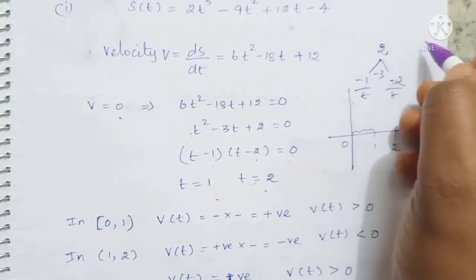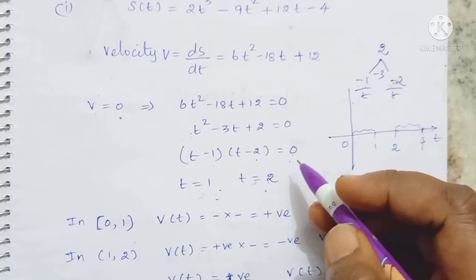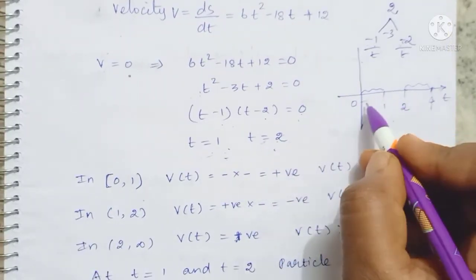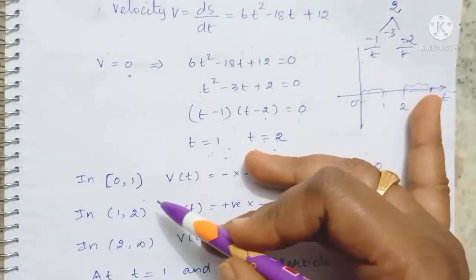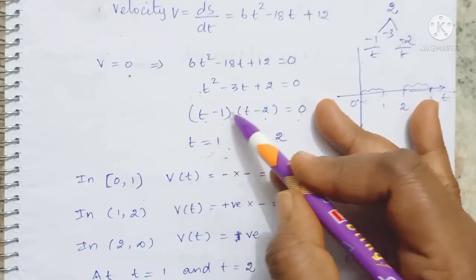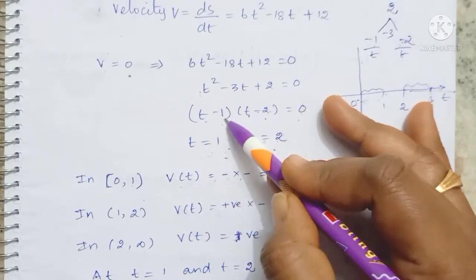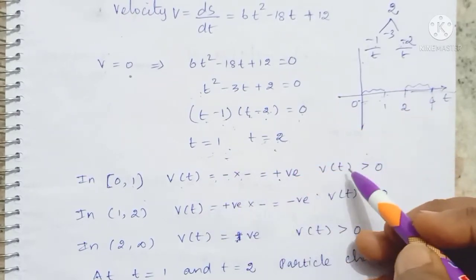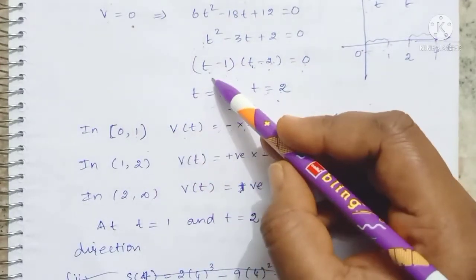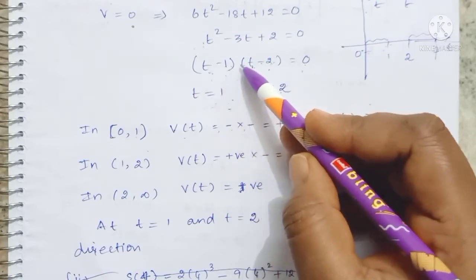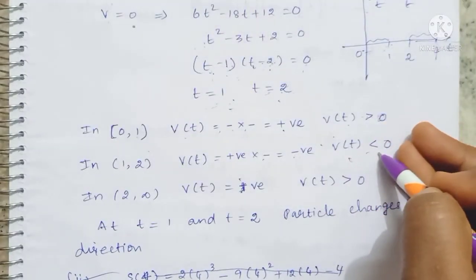We fix the intervals: starting from t equals 0, we have intervals 0 to 1, then 1 to 2, then 2 to infinity. For 0 to 1, taking a test value less than 1, both factors (t minus 1) and (t minus 2) are negative, so negative times negative is positive — velocity is positive, meaning the particle is moving forward. For 1 to 2, taking t equals 1.5: (1.5 minus 1) is positive and (1.5 minus 2) is negative, so positive times negative is negative — velocity is negative, particle is decreasing.